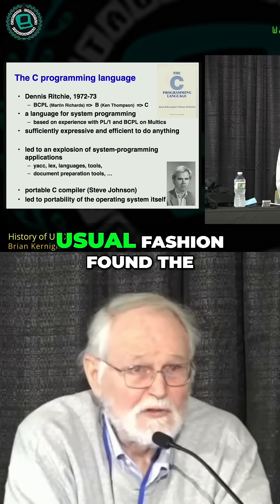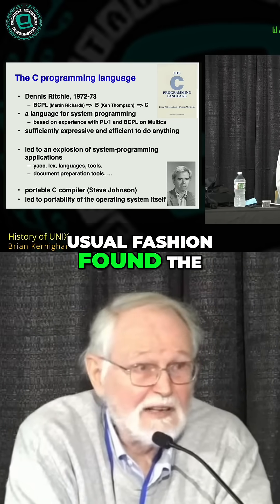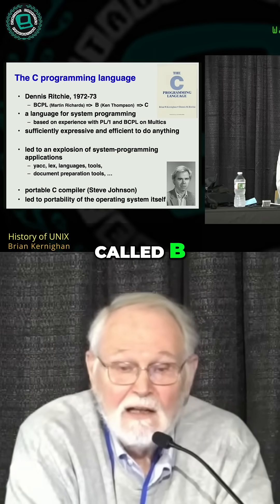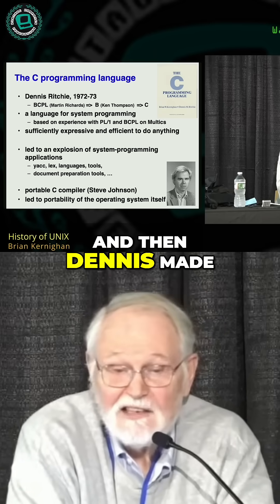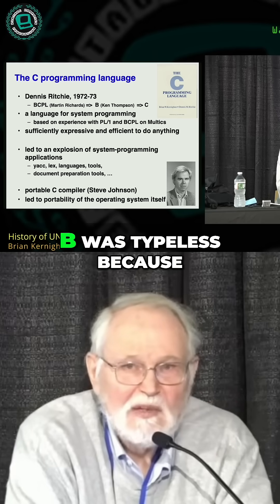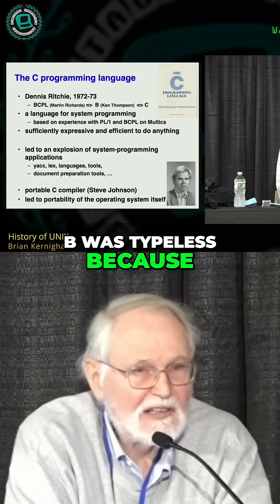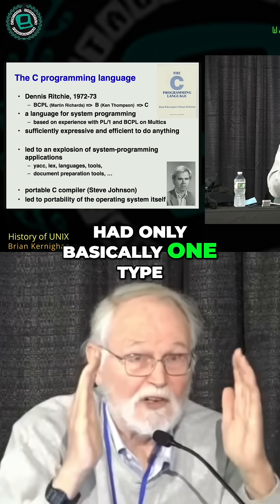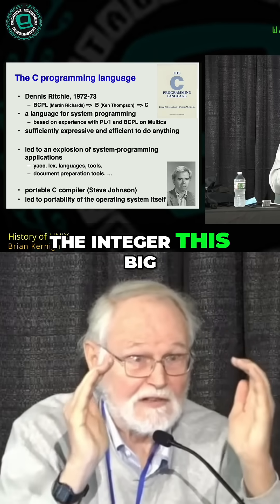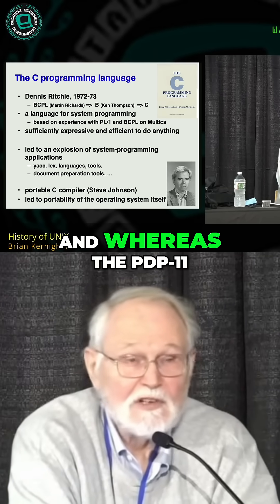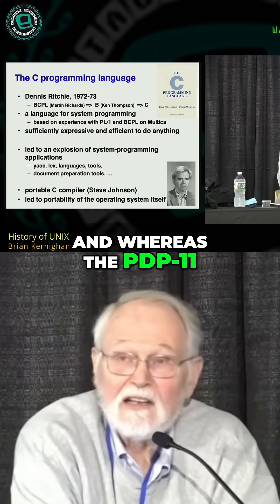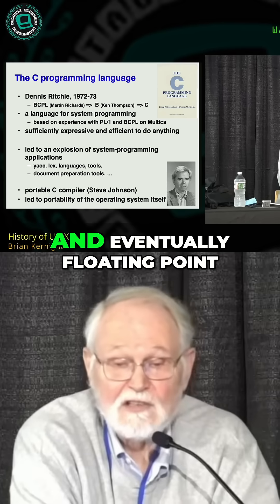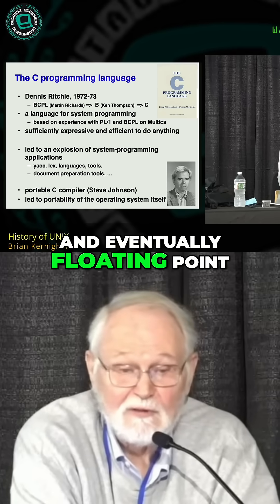Ken Thompson, in his usual fashion, found the essence of that and made a smaller language called B, and then Dennis made this language called C. B was typeless because the machines it ran on had basically only one type — the integer — whereas the PDP-11 had characters, integers, and eventually floating point.